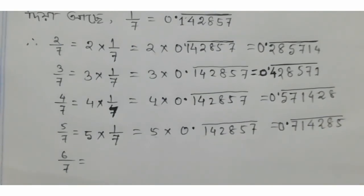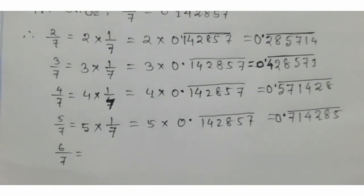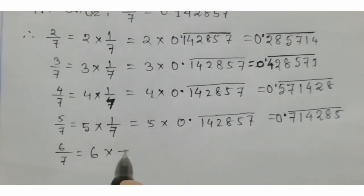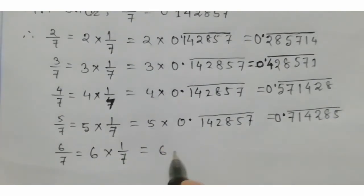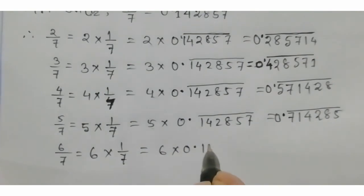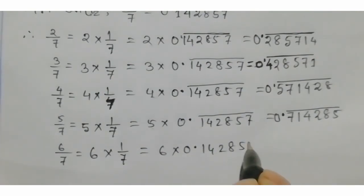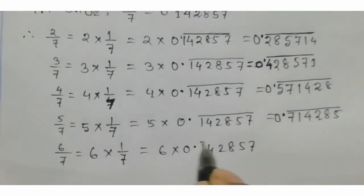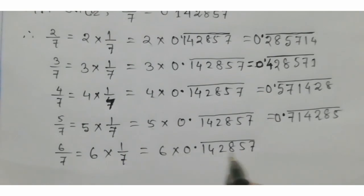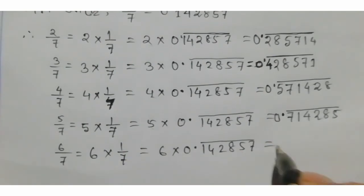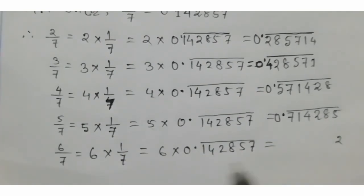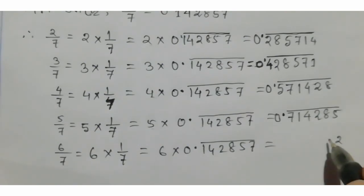So we'll give 6 by 7 equal to 6 times 1 by 7. So that gives 6 times 0.142857.